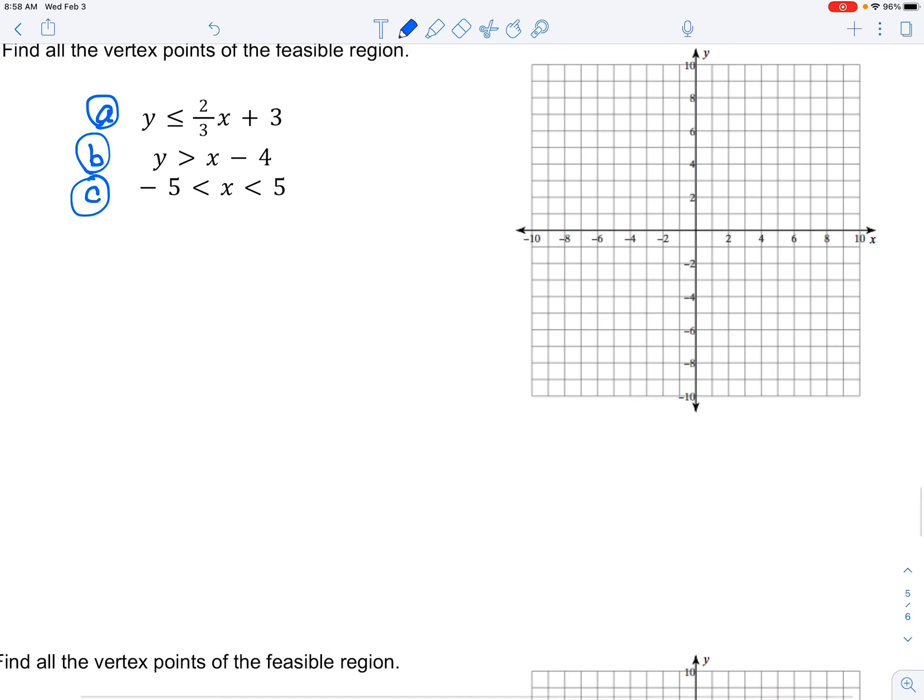Y is less than or equal to 2/3 X plus 3. Step 1 is you just graph the line Y equals 2/3 X plus 3, and this should be getting pretty automatic for you. You find the Y-intercept, that's 0, 3, then the slope is 2/3, that is rise over run, 3 over 2 up. You only need 2 points, but it's good to get that pattern going.